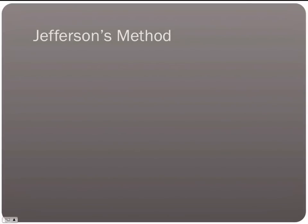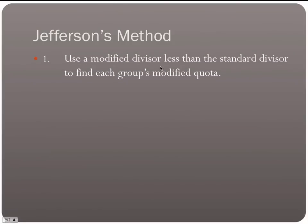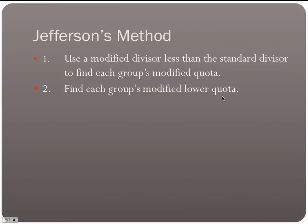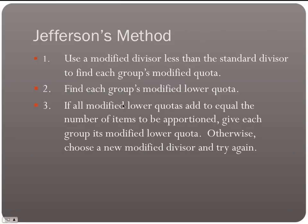In Jefferson's method — Thomas Jefferson, pretty important guy — first, use a modified divisor less than the standard divisor to find each group's modified quota. For Jefferson's, we go a little bit below the standard divisor. Then find each group's modified lower quota, meaning we round everything down. If all the modified lower quotas add up to equal the number of items to be apportioned, give each group its modified lower quota. Otherwise, choose a new modified divisor and try the process again.